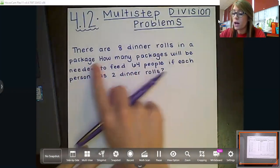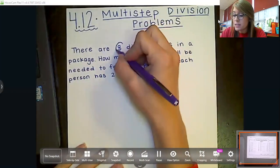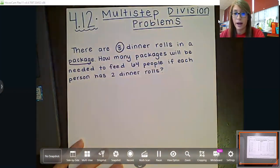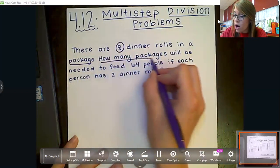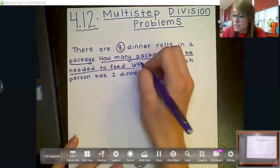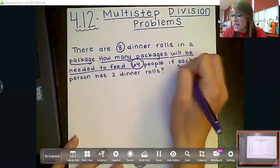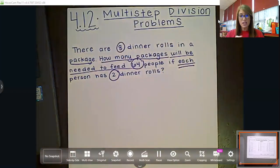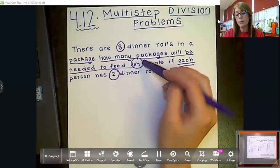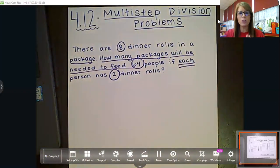Okay, so we know that there are eight dinner rolls in a package. They want to know how many packages are going to be needed to feed 64 people if each person is getting two. The first thing we need to do is we don't know how many packages we need to buy until we know how many rolls we need. So how are we going to figure out how many rolls we need total if there's 64 people and each person's going to get two?